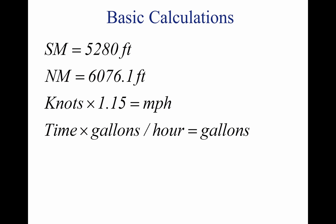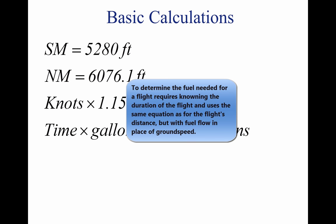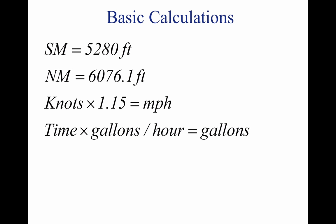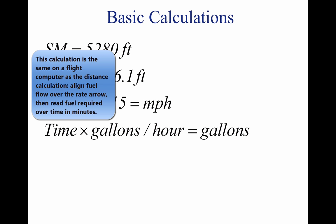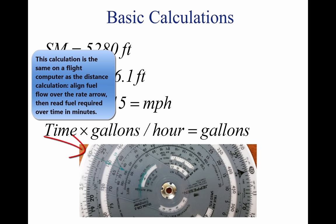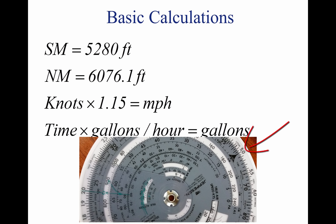Fuel consumption. Aircraft fuel consumption is computed in gallons per hour. Consequently, to determine the fuel required for a given flight, the time required for the flight must be known. Time in flight multiplied by rate of consumption gives the quantity of fuel required. For example, a flight of 400 nautical miles at a GS of 100 knots requires 4 hours. If an aircraft consumes 5 gallons an hour, the total consumption is 4 times 5, or 20 gallons.